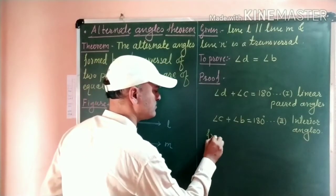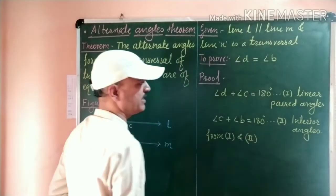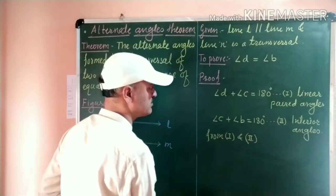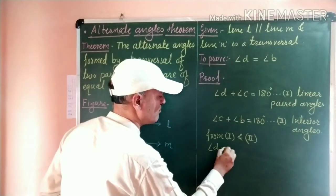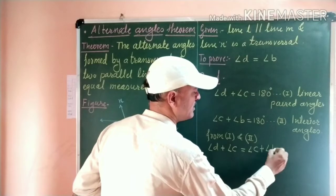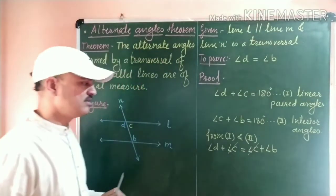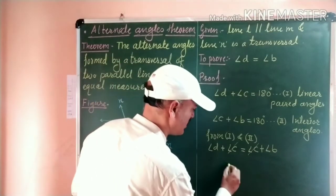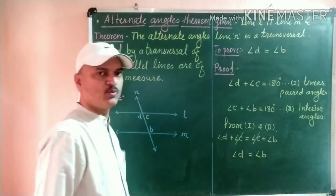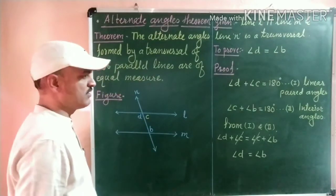By comparing statement one and statement two — on the right-hand side of both equations there is 180 degrees — therefore these two statements are equal: angle D plus angle C is equal to angle C plus angle B. On both sides there is angle C, so they cancel out, and we get angle D is equal to angle B. Hence, this is proved: angle D and angle B, the alternate angles, are of equal measure.